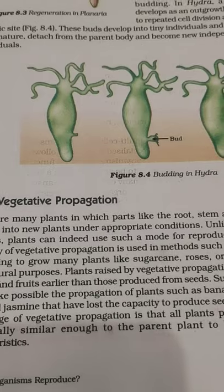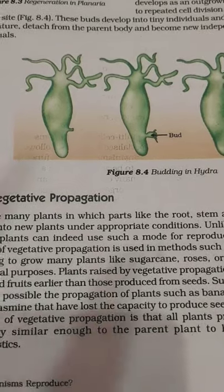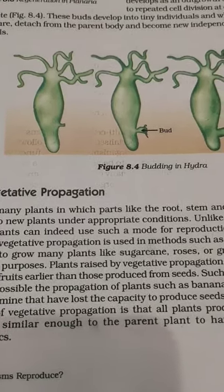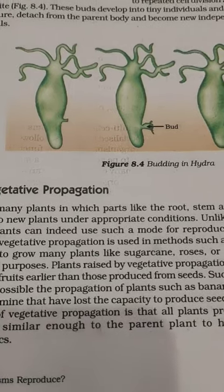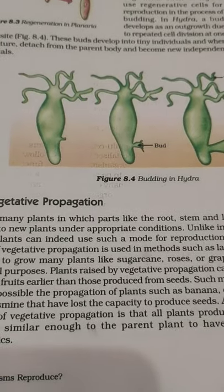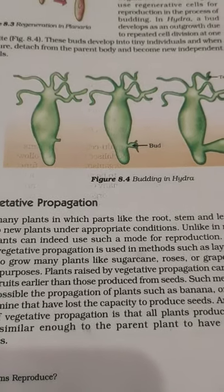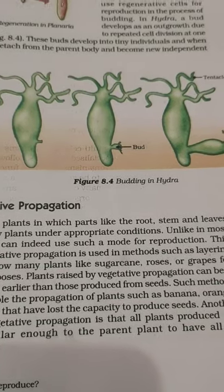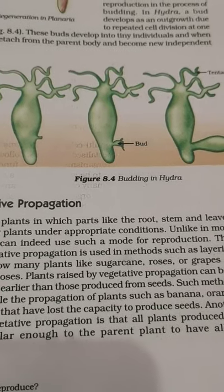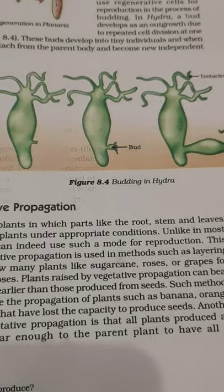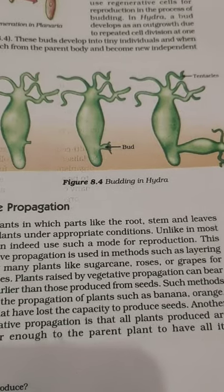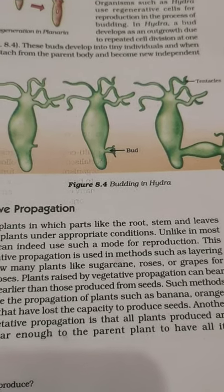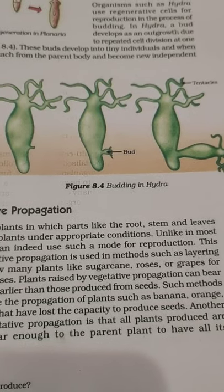Vegetative propagation usually involves the growth and development of one bud present in the old part of the plant to form a new plant. These buds are actually in a dormant, or inactive, state in the old part of the plant. When we provide suitable conditions to those buds — like moisture or nutrients — they grow to form a new plant.